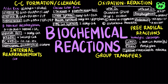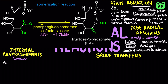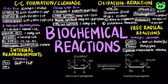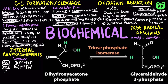Isomerases convert a molecule from one isomer to another. Examples include phosphoglucose isomerase in glycolysis, which interconverts glucose-6-phosphate and fructose-6-phosphate, as well as phosphomannose isomerase, which interconverts fructose-6-phosphate and mannose-6-phosphate, which is part of the pathway for how mannose enters glycolysis. Triosephosphate isomerase is another enzyme of glycolysis that interconverts dihydroxyacetone phosphate and glyceraldehyde-3-phosphate, as well as glyceraldehyde from fructose catabolism.